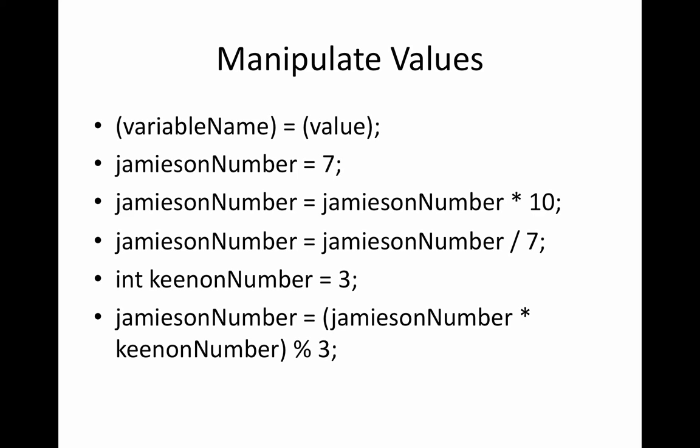And now Jameson number equals parentheses Jameson number times Kenan number modulo 3. So now what we're going to do, the computer's going to take this by parentheses first, and then modulo, and then the assignment. So first it's going to get Jameson number, which is equal to 10 after this long string of operations. Then it's going to multiply it by Kenan number, which is 3, so we end up with 30.